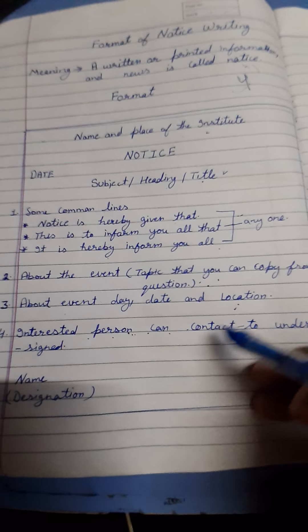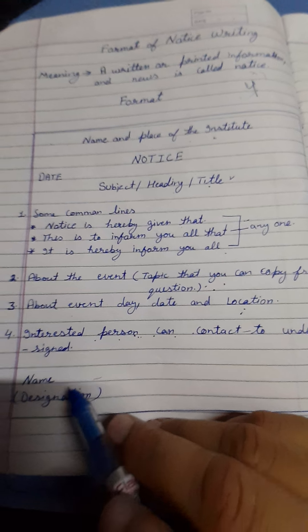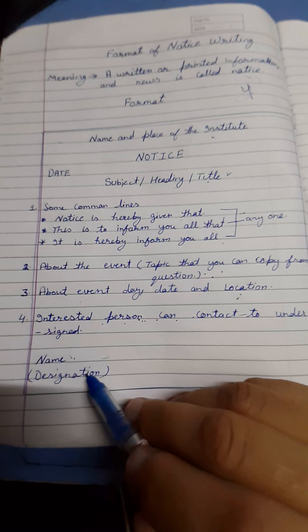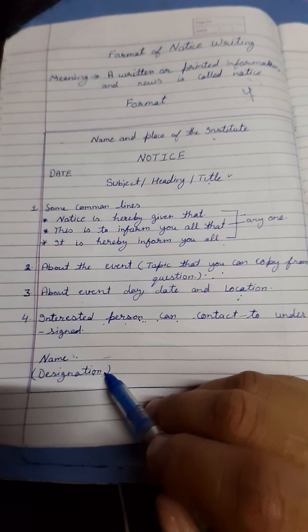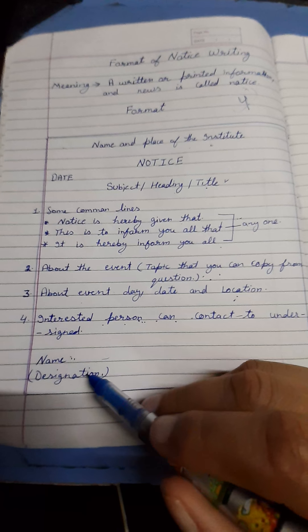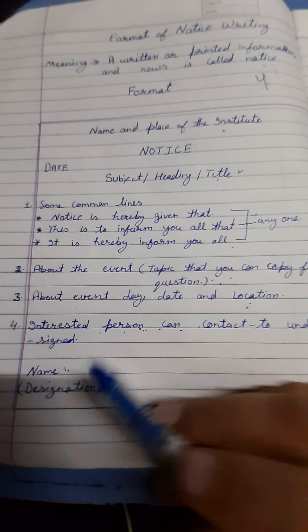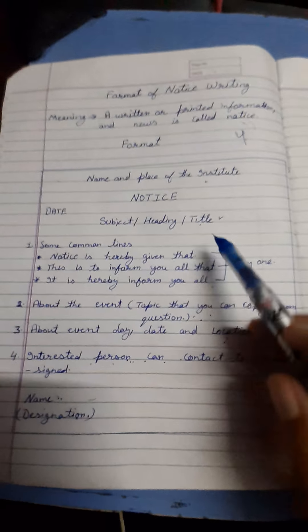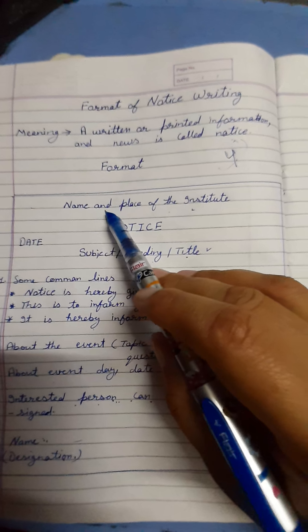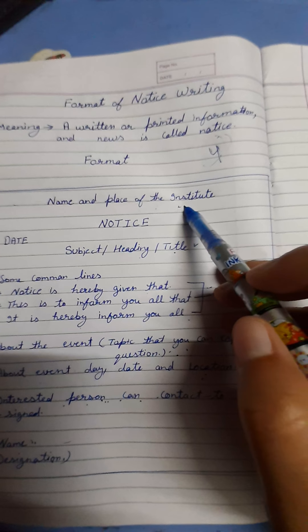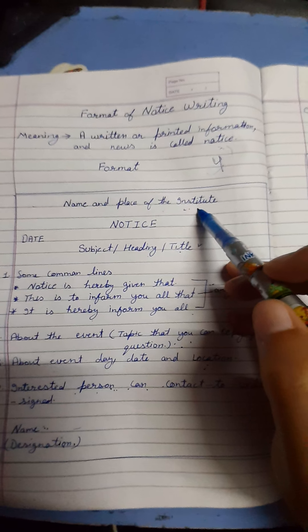In the fourth line, we write 'Interested persons can contact' — this is the sum-up line of your notice, giving information about whom the person can be connected with. In the last line, you have to write down your name, and in brackets, your designation — the position you hold and on whose behalf you are writing the notice.